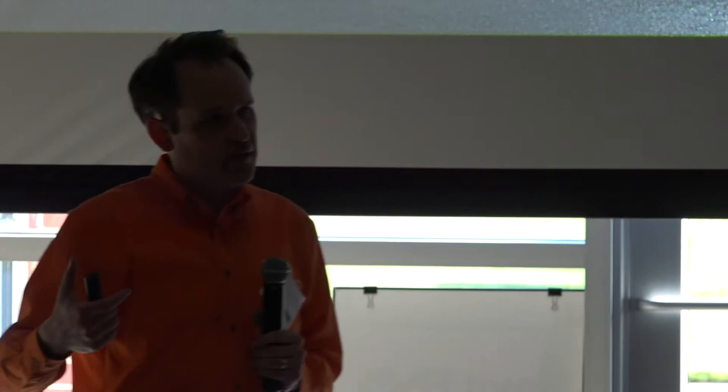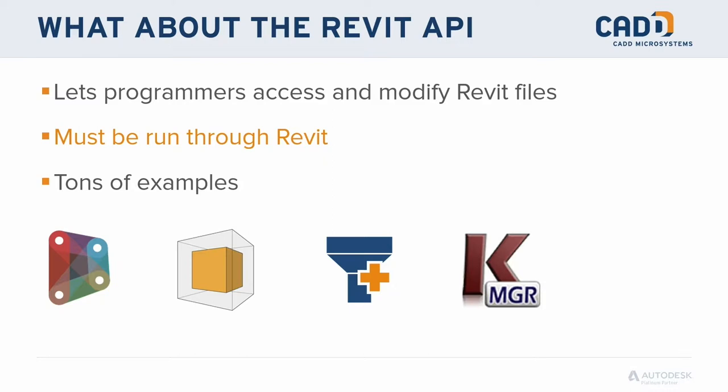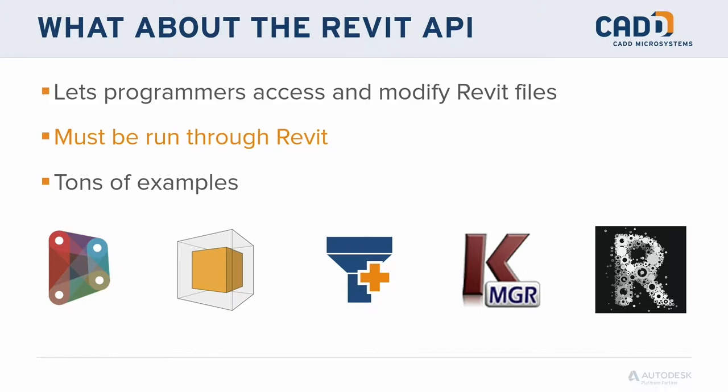Autodesk itself uses the API to enhance software rather than building features directly into Revit. Room Book is an example, Model Checker, the Kobe extension, and Workshare Monitor are all add-ins that access through the API. Here at CAD Micro Systems we build our own tools — Filter Plus and Keynote Manager. There's also a blog, revitaddons.blogspot.com, where a dozen new Revit plugins come out every week, ranging from tools that do one tiny thing to tools that do 10,000 things.